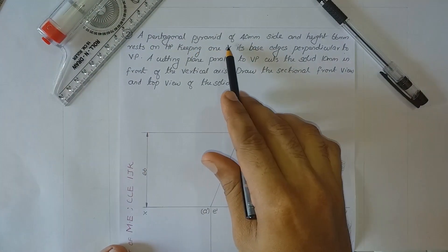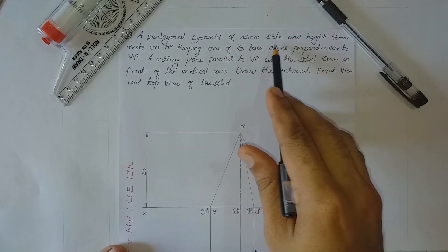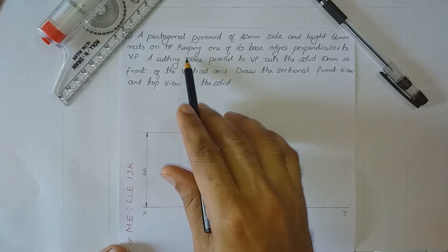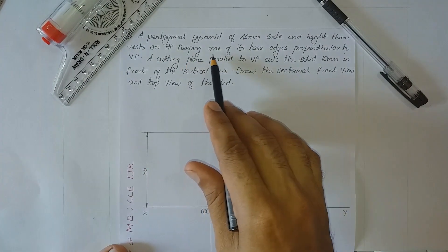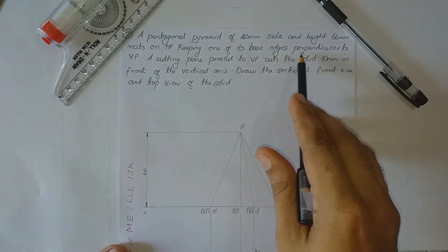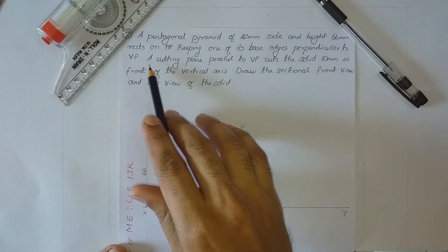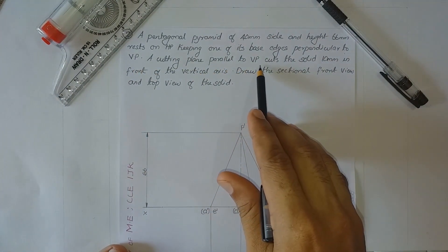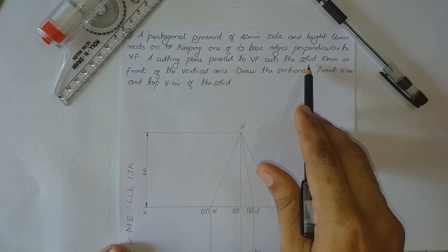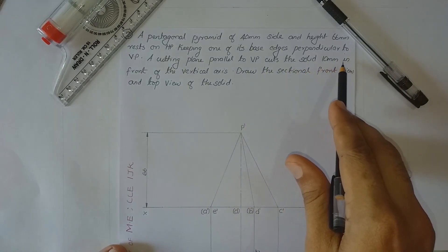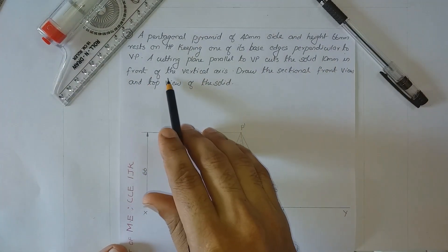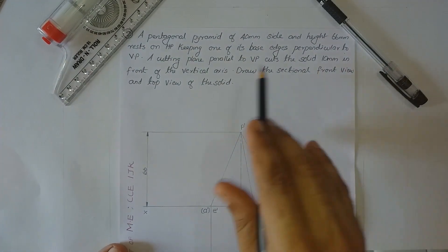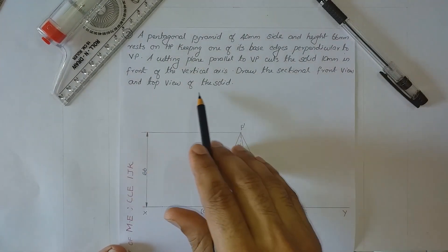A pentagonal pyramid of 40mm side and height 66mm rests on the HP, keeping one of its base edges perpendicular to VP. A cutting plane parallel to VP cuts the solid 10mm in front of the vertical axis. Draw the sectional front view and top view of the solid.